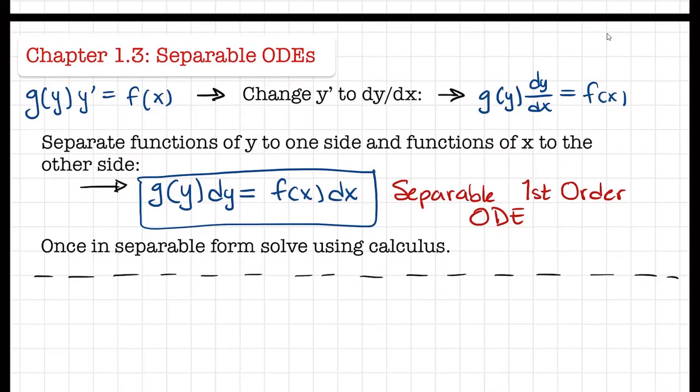We can get our final solution in the format that we want. You can see we have the example: a function g(y) times y-prime equals f(x). The first step that we always do is we change that y-prime into dy/dx. We then separate the functions to the corresponding variable — all functions with y go to one side, all functions with x go to the other side. That becomes a first-order separable ODE. We integrate both sides and then we get our solution. You probably saw this already in class, but hopefully this example will make it easier.